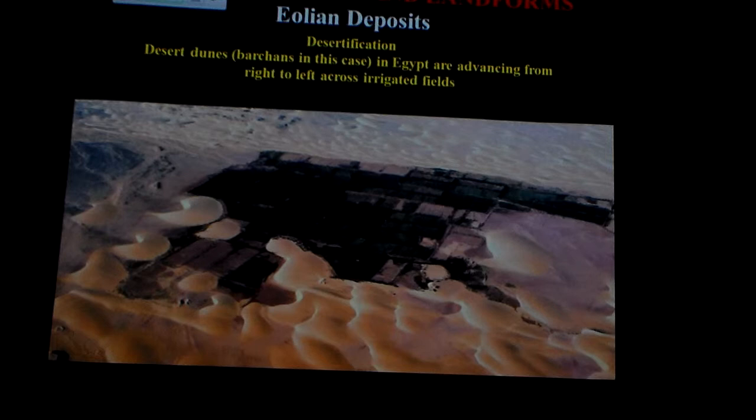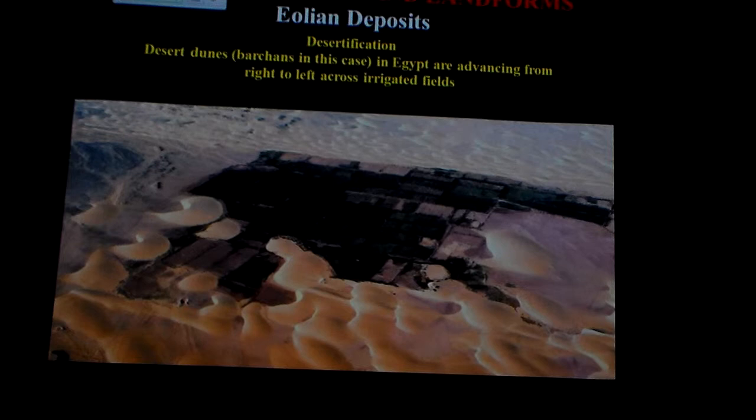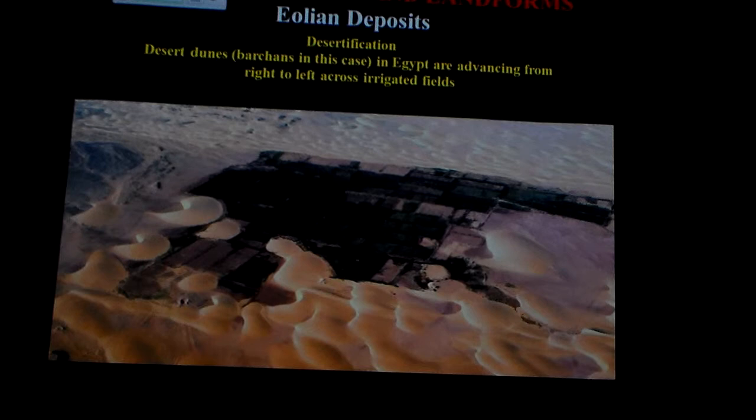Obviously global warming is probably not helping this process — it's probably helping to drive it. Most portions of northern Africa used to be lush, verdant topography. Yet desertification, as climate patterns have changed, has produced a band of desert now that is growing on a yearly basis.